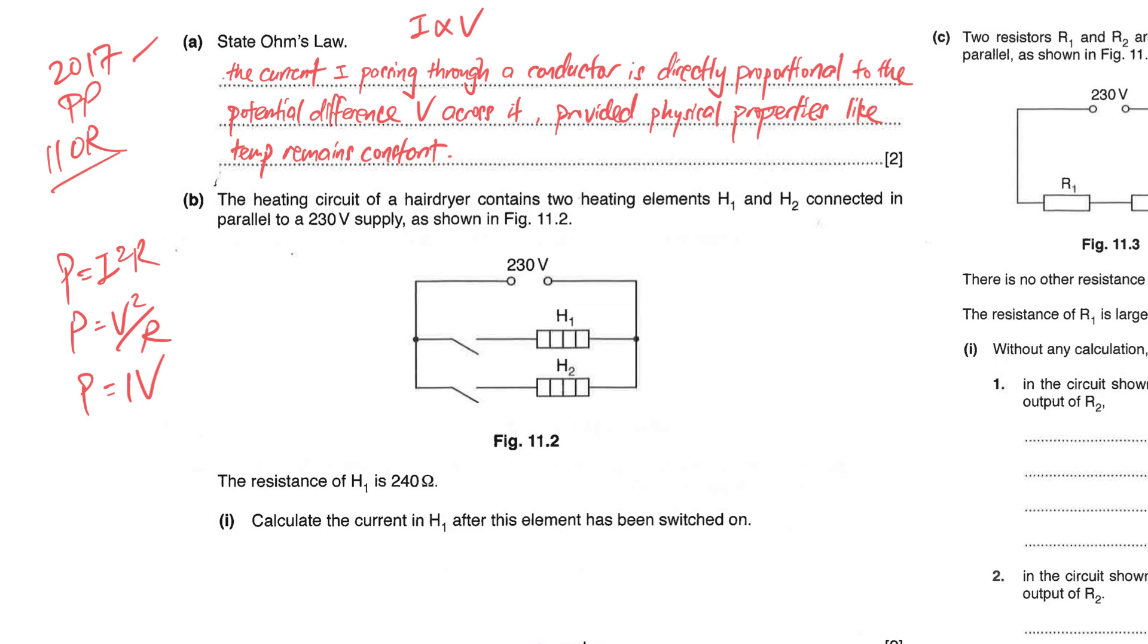Next you have a heating circuit of a hair dryer containing two heating elements H1 and H2, and they are connected in parallel. The power supply is a 230 volt supply and it is given that for H1 the resistance is 240 ohms.